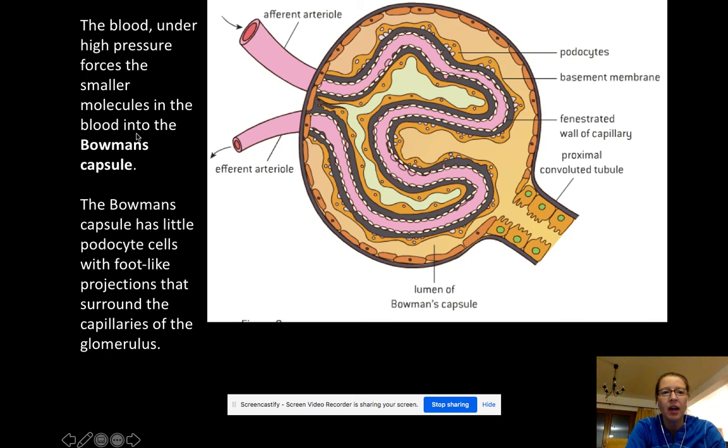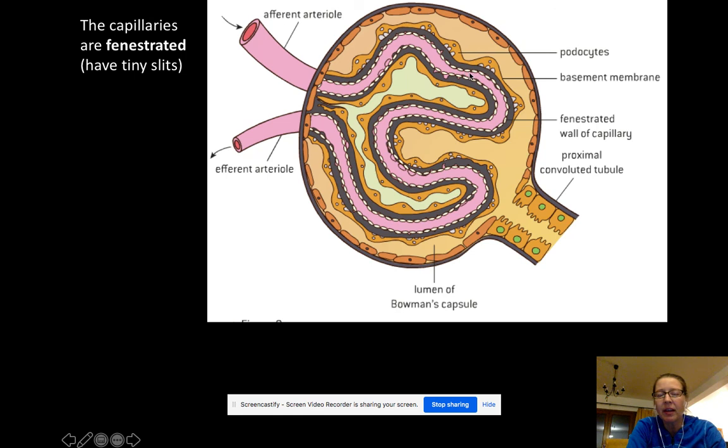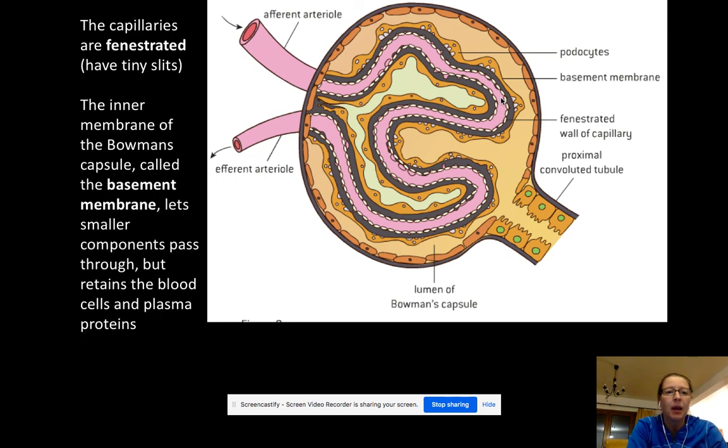So this blood, it's under high pressure and it forces small molecules into the Bowman's capsule. And you can see there's these little foot-like things, they're called podocytes and those are kind of surrounding it to maximize surface area. And then another important aspect is that the capillaries here are fenestrated. What that means is they have tiny little slits and that's going to let certain molecules out. So this is definitely like a selective membrane here, but these little slits are going to let more water and other things just kind of out of it. So you need to know the word fenestrated. They might use it. The inner membrane of this Bowman's capsule is where it's going to collect the major components pass through.